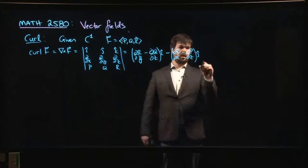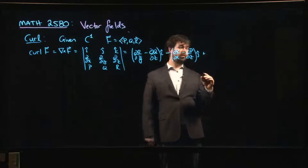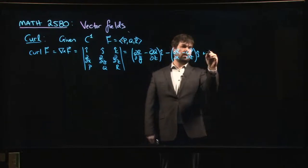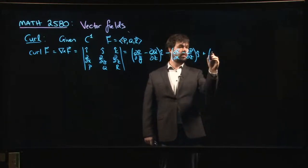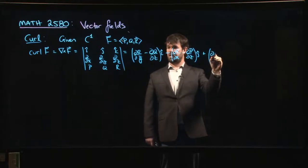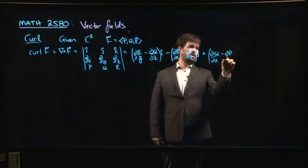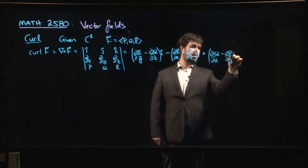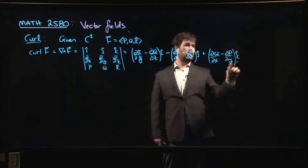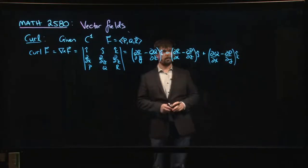Okay, and then finally, and we're almost at the other side of the board, right? For the k component, we have dQ/dx minus dP/dy, and that's your k component, right?